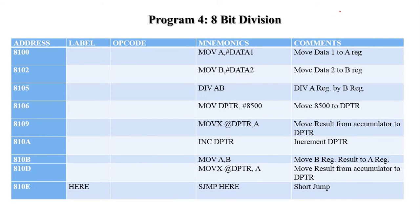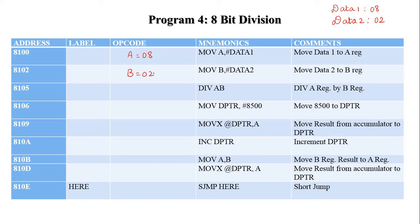Program 4: 8-bit division. Two 8-bit data values are considered. Data 1 is 08H and Data 2 is 02H. The first instruction moves Data 1 (08H) into the accumulator register, so the accumulator equals 08H. Data 2 (02H) is moved to the B register. Then we divide A by B: 8 ÷ 2 = 4. This quotient value 04H is available in the accumulator register.